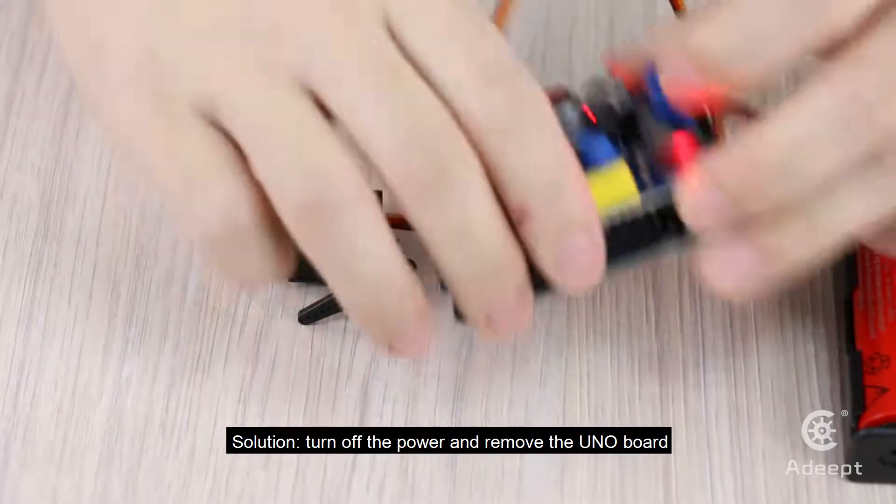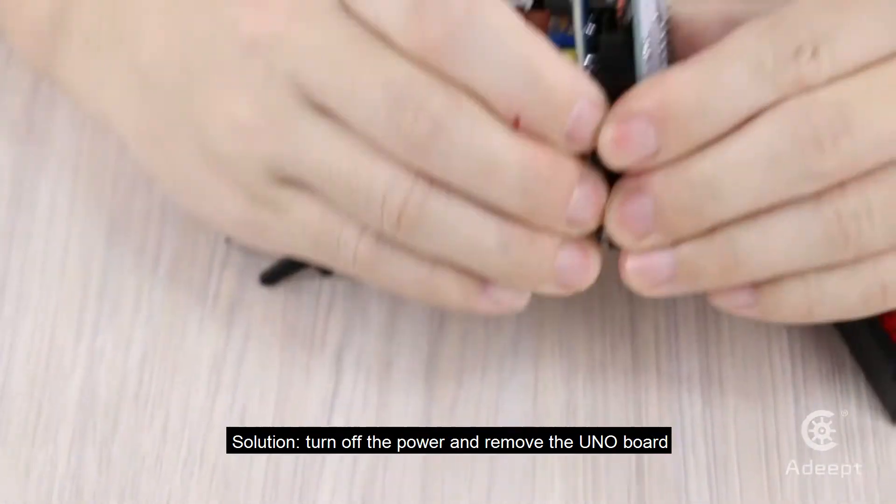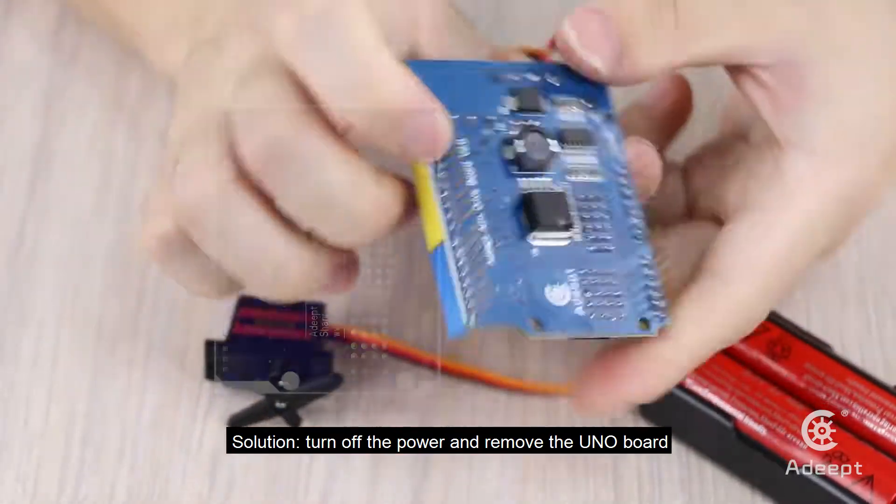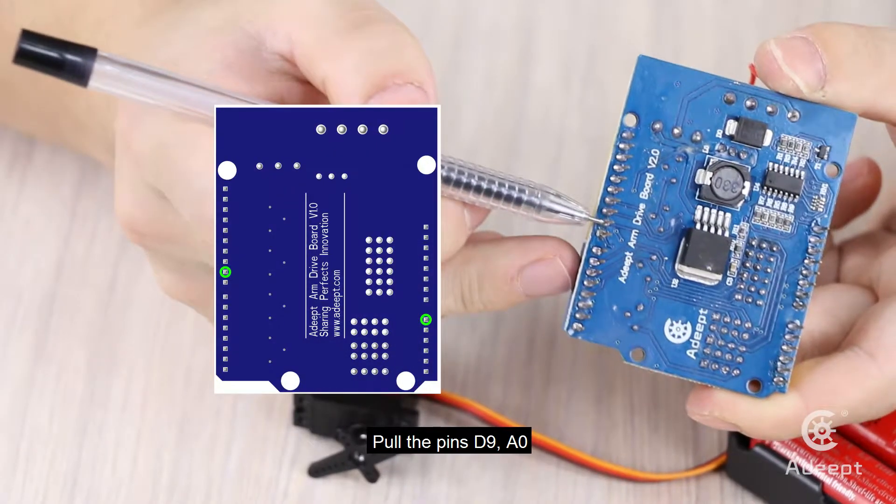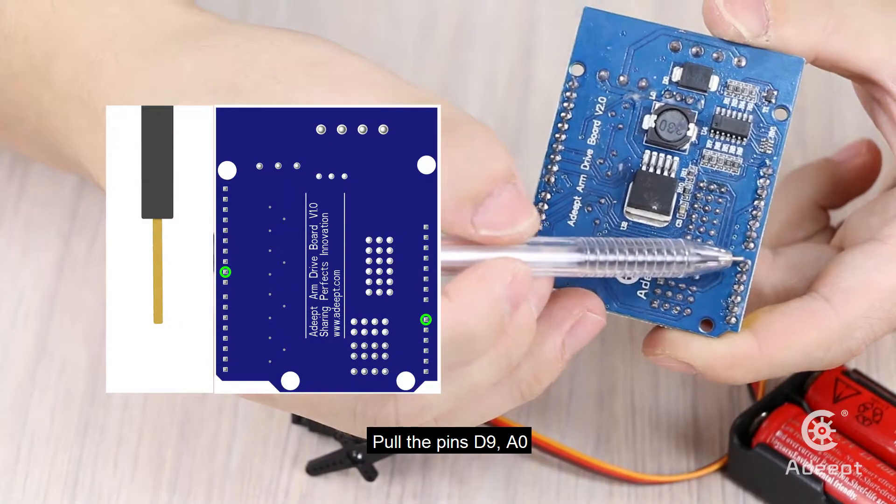Solution: Turn off the power and remove the UNO board. Hold the pins D9 and A0 right and left.